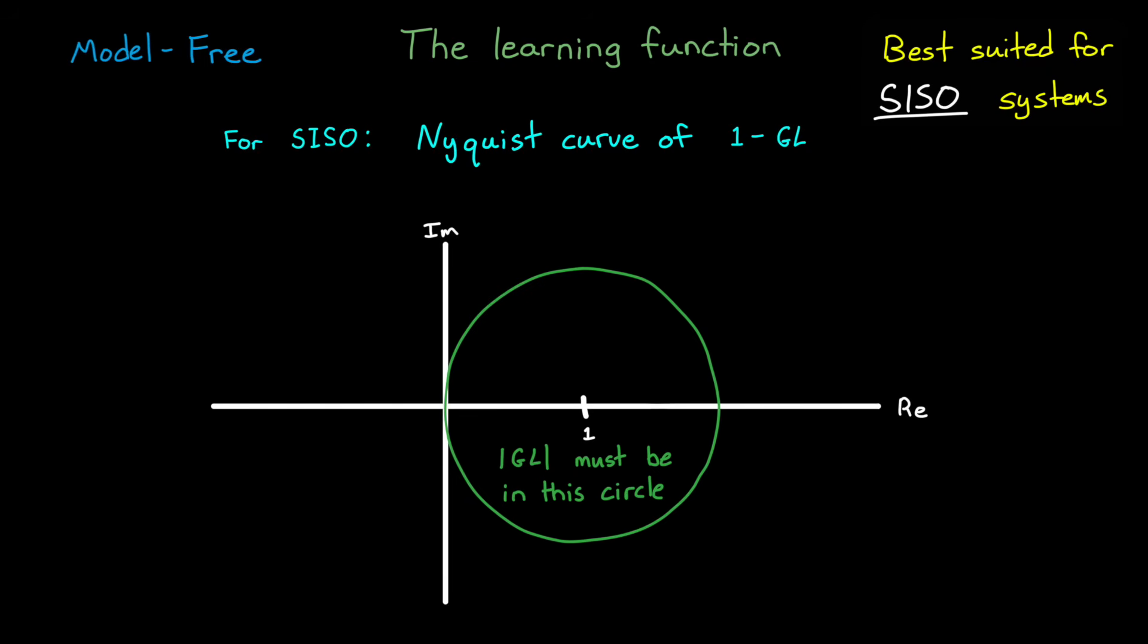If the Nyquist curve of gl falls outside of this circle, even for just a few frequencies, then the error will grow for those frequencies, and the learning will not be stable.